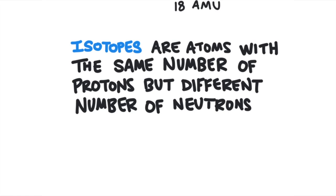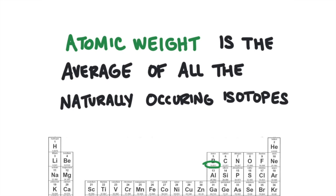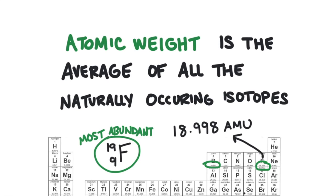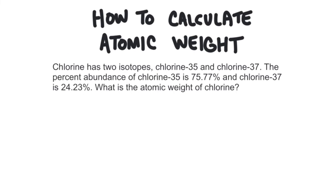So fluorine-19 and fluorine-18 are isotopes of fluorine. There's another number on the periodic table called the atomic weight, also known as the atomic mass. This is the average mass of all the different naturally occurring isotopes of that particular element. The atomic mass of fluorine is 18.998. Since this average is so close to 19, it tells us that the most abundant fluorine in the universe has a mass of 19 — the fluorine-19 isotope. To calculate the atomic mass, we take the weighted average of all the different types. Chlorine has two isotopes: chlorine-35 and chlorine-37. The percent abundance of chlorine-35 is 75.77%, and the percent abundance of chlorine-37 is 24.23%. What is the atomic weight of chlorine?